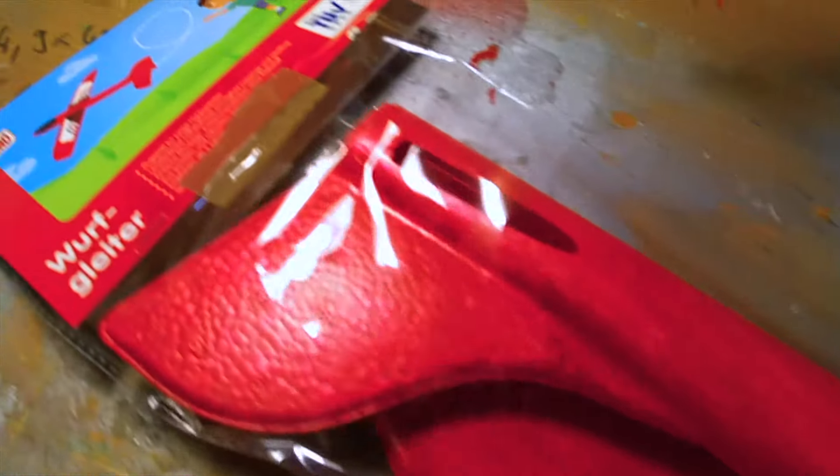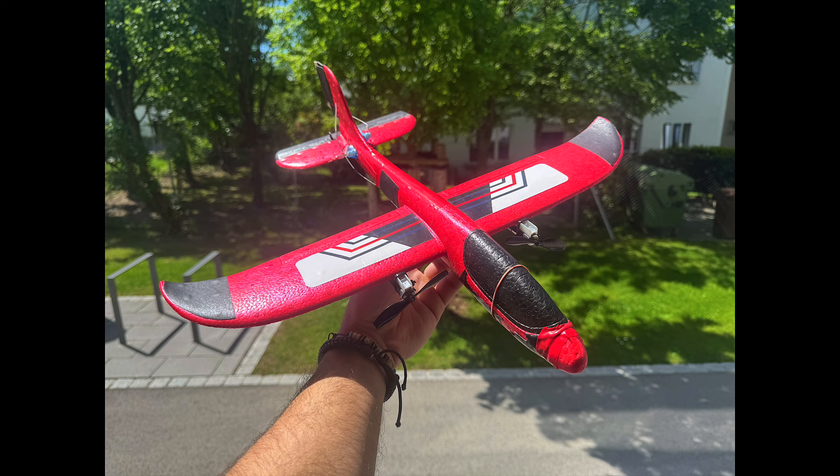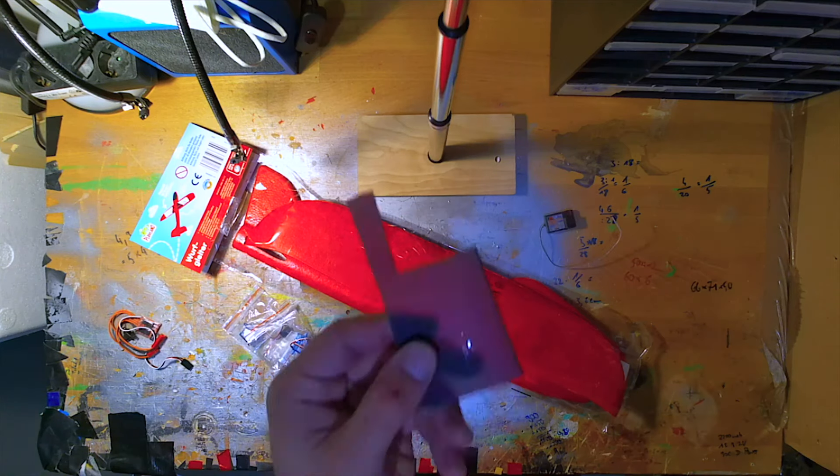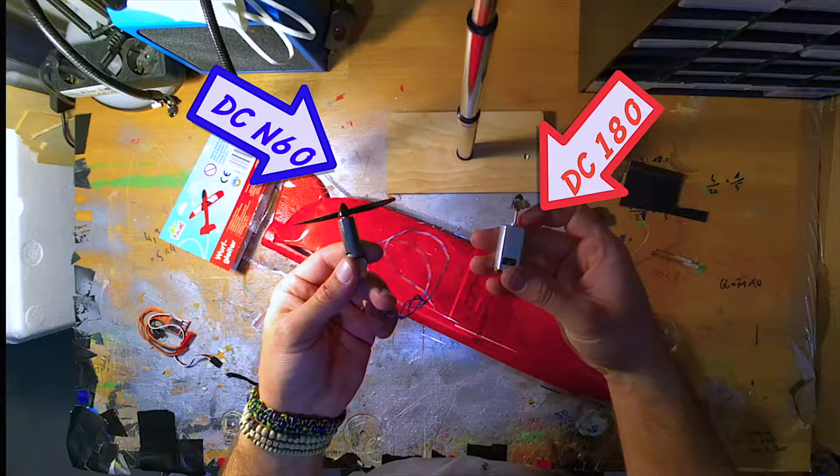In this video I show you how to turn a toy glider into a fast flying RC plane. Find a first flight demo at the end of the video. I use simple and cheap parts for the build and show you two different motor options.